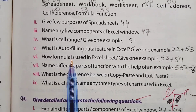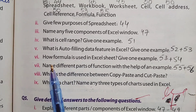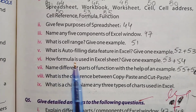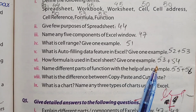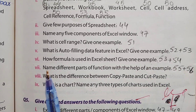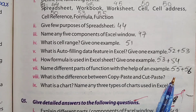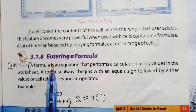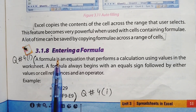Assalamualaikum students, today we will discuss unit number 3, exercise question number 4, part number 6 and 7. Part number 6 is: how is a formula used in an Excel sheet? Give one example. The answer is on page number 53 and 54. Part number 7 is: name the different parts of a function with the help of an example. The answer is on page number 55 and 56.